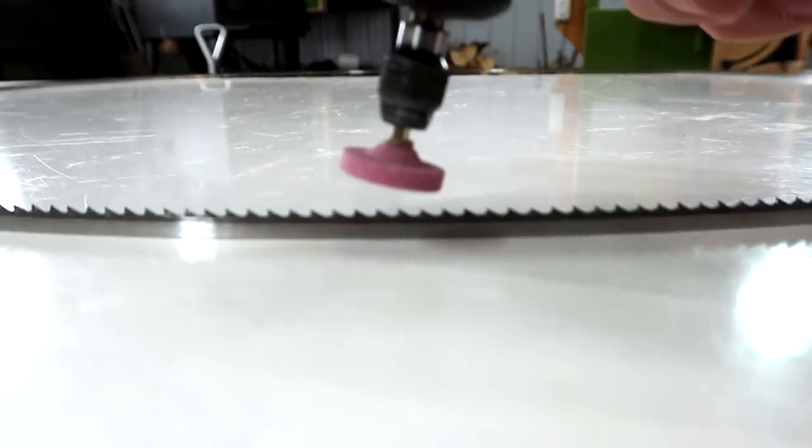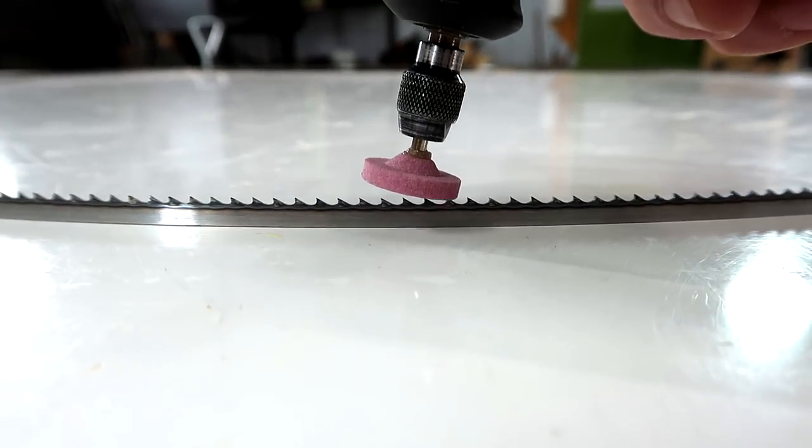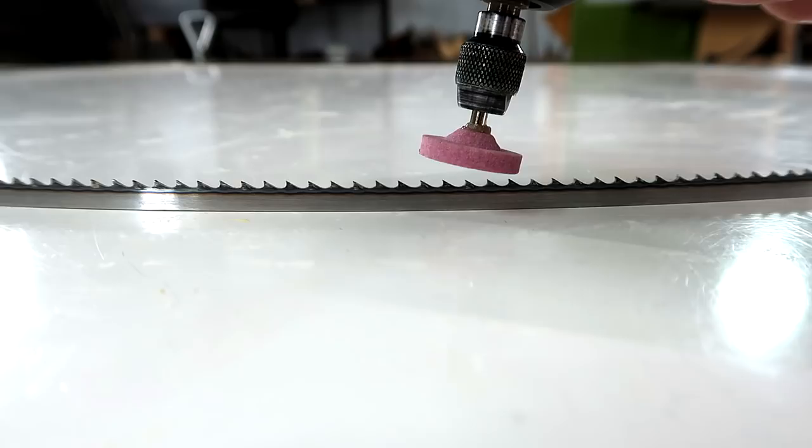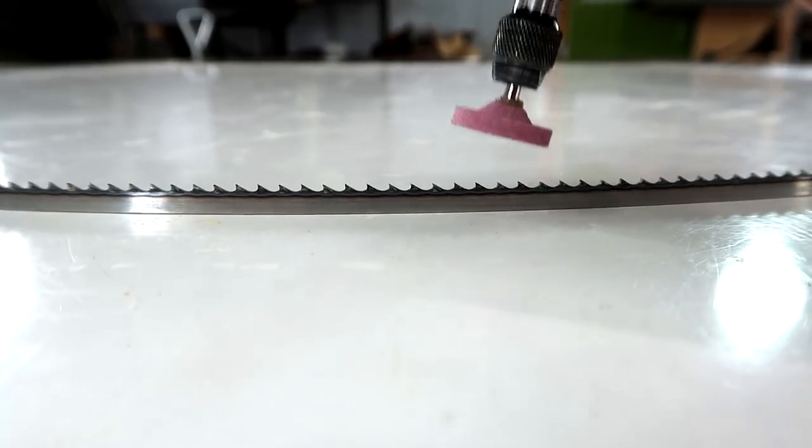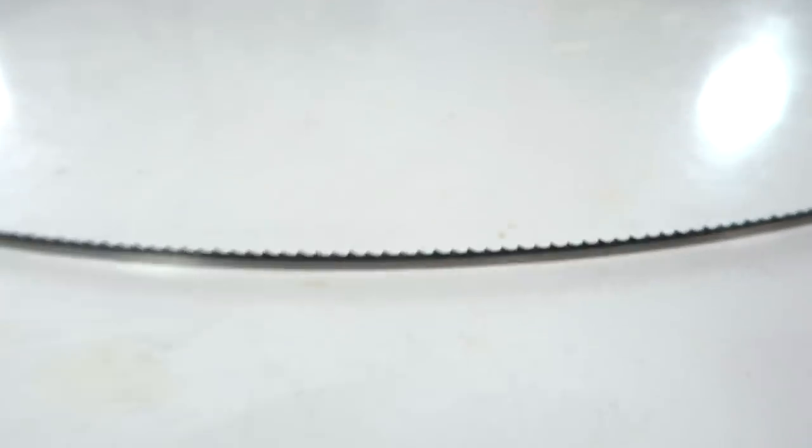I've been sharpening these blades by touching the top of every tooth with a Dremel tool like this. But it's kind of stressful and I usually end up nicking some of the teeth. So I've been thinking about making a jig to improve on that.